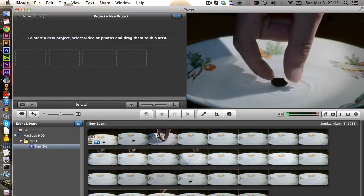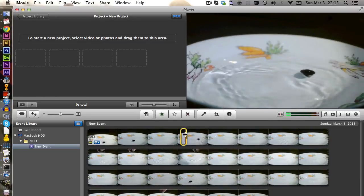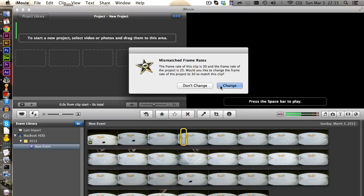So let's say we have decided for maybe this impact here. We select it and then we drag it into the actual movie area. And here it is saying something about frame rates. We don't want to change those.